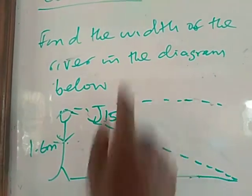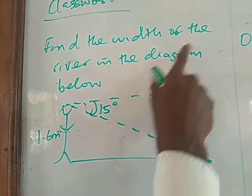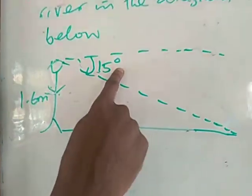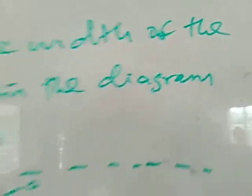The classwork is to find the width of the river in the diagram below. You can see the angle of depression here. This is the height of the person. Find the width of the river. Your assignment will follow your classwork. Thank you.